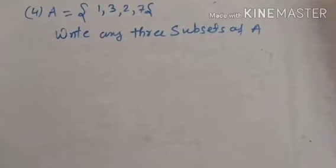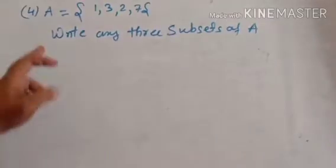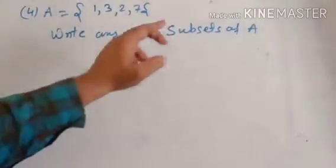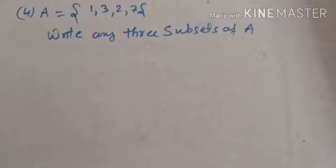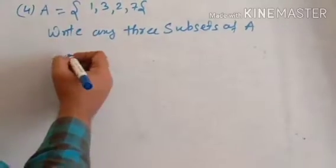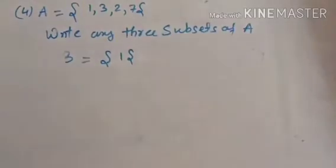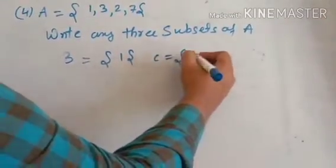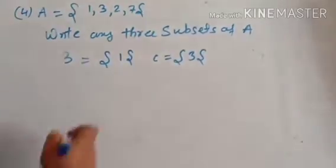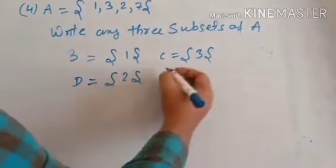Question number 4: A is equal to {1, 3, 2, 7}. Write any three subsets of A. There are a lot of subsets of A. Taking single elements: B = {1} is a subset of A, C = {3} is a subset of A, D = {2} is a subset of A, and E = {7} is also a subset of A.